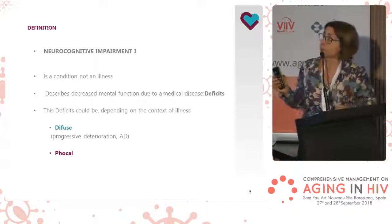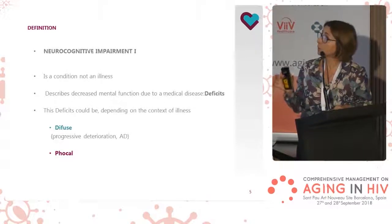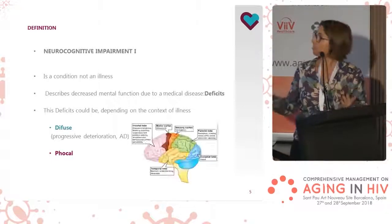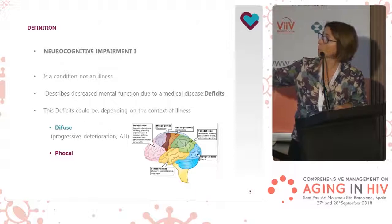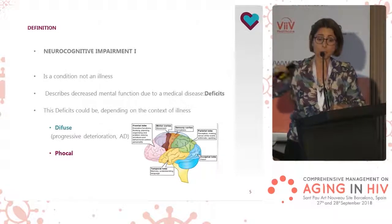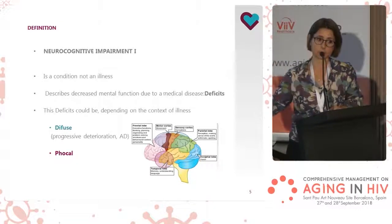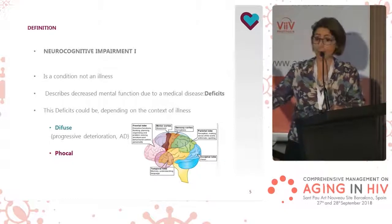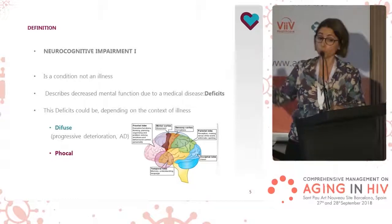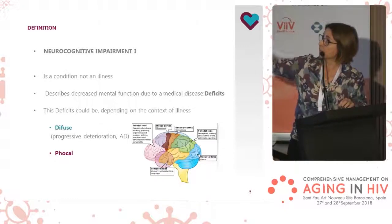Neurocognitive impairment is a condition, not an illness. It describes decreased mental function due to a medical disease. These deficits could be diffuse, affecting several areas of the brain, or focal — for example, in a vascular cerebral accident — or in the other case of diffuse processes such as Alzheimer's dementia, where different deficits are affected.